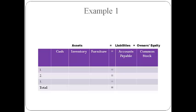Let's now go through a few examples of recording balance sheet transactions. The first step is to set up the accounting equation: assets equal liabilities plus owner's equity. The next step is to set up the columns to write the account names that change with each transaction. The account names are generally taken from the prior period balance sheet.